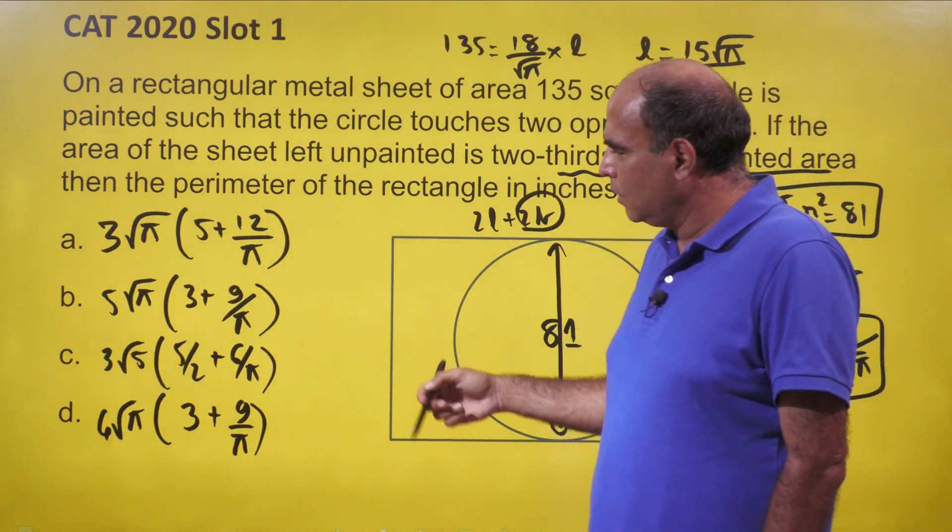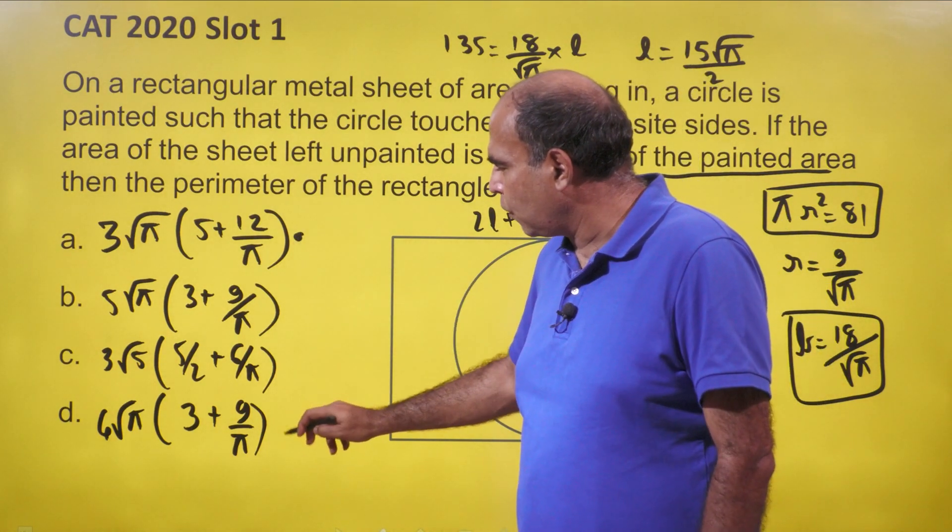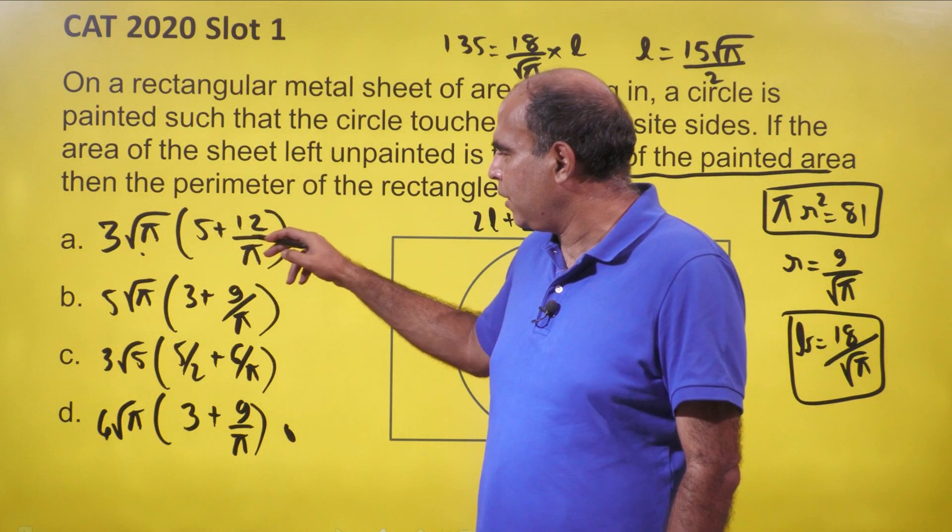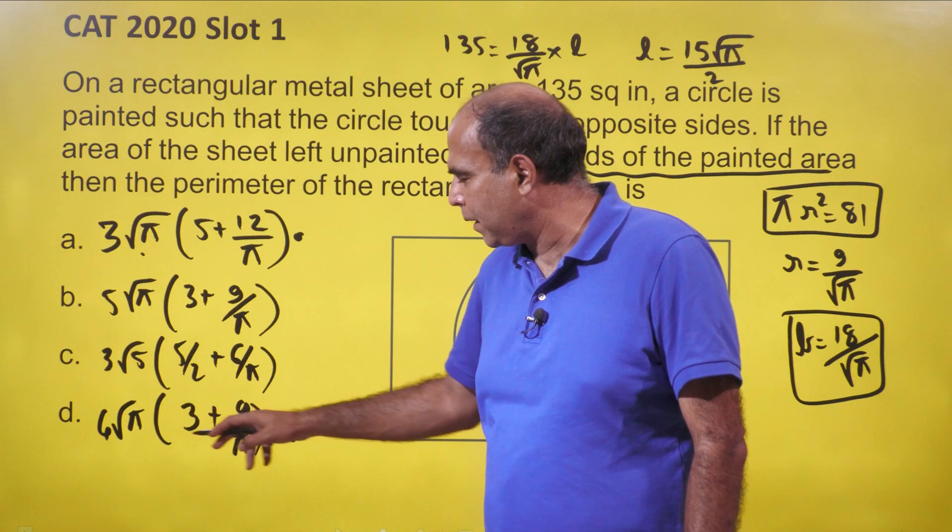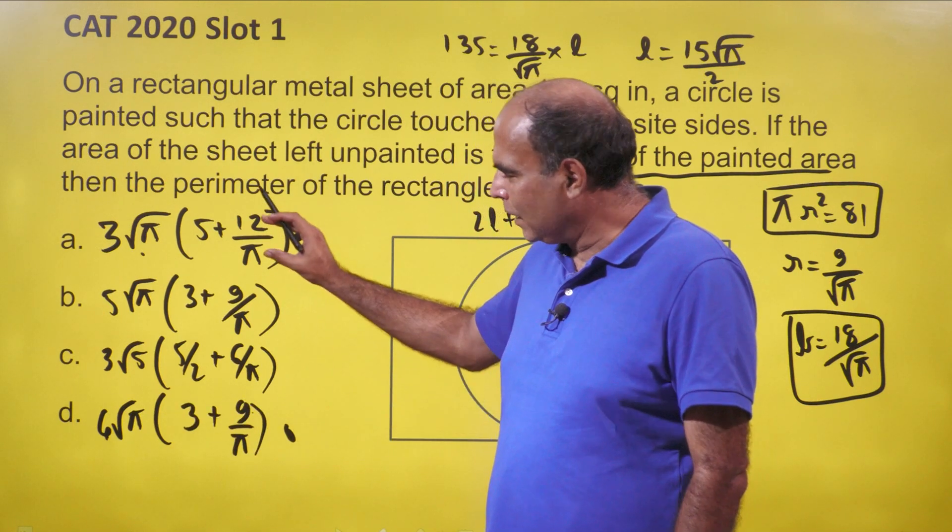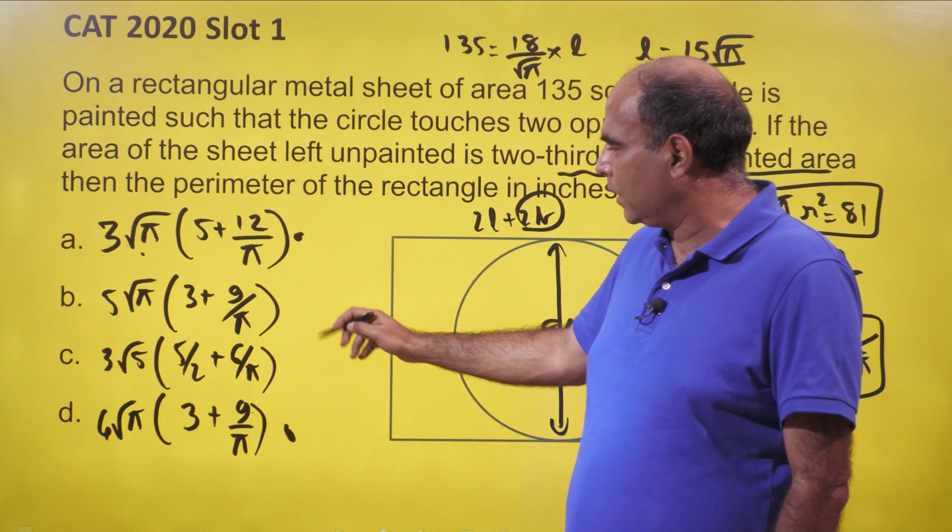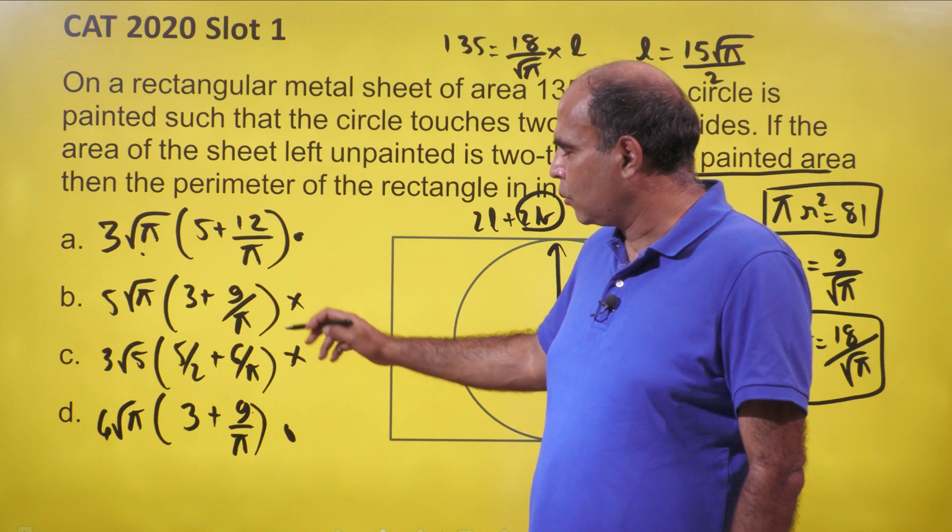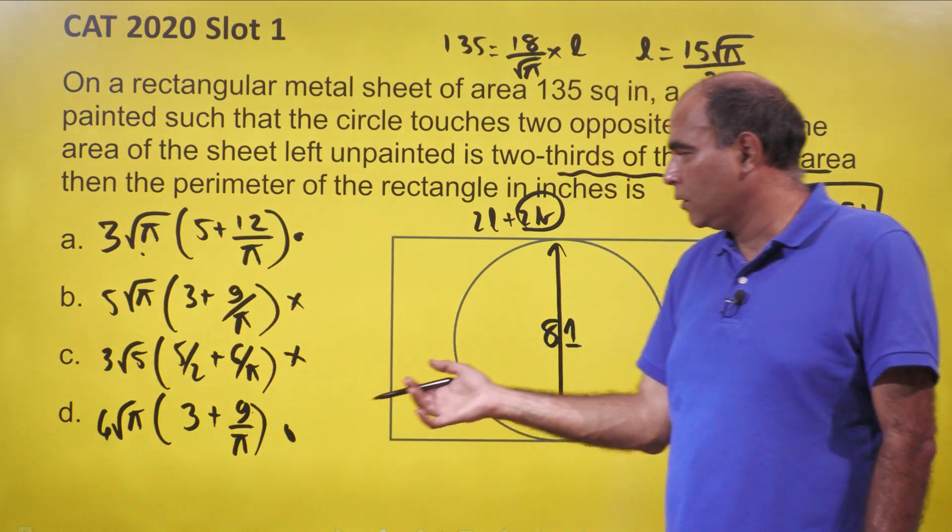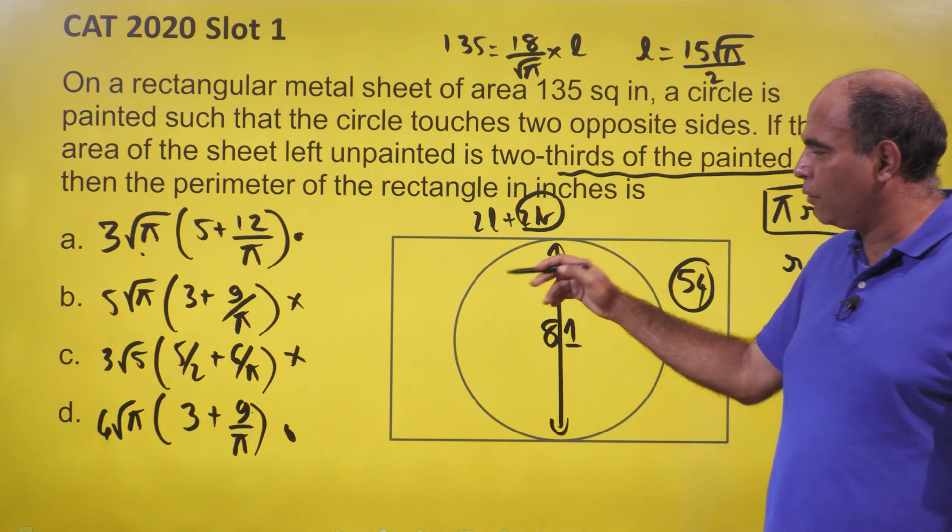If I look through the options, option 1 and option 4 gives me 3 root π into 12 by π or 4 root π into 9 by π. So one term of this will become 36 root π. These two options are eliminated because both of them do not give me 36 by root π at all.